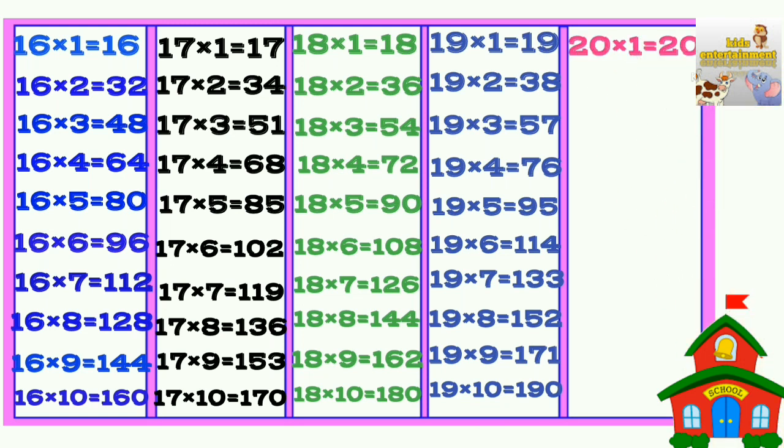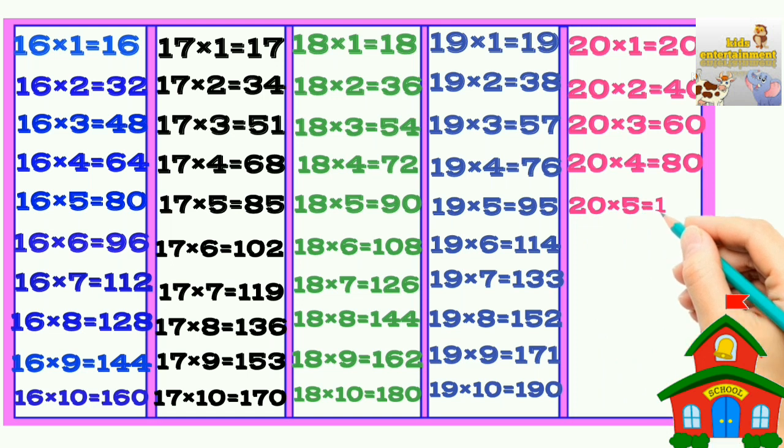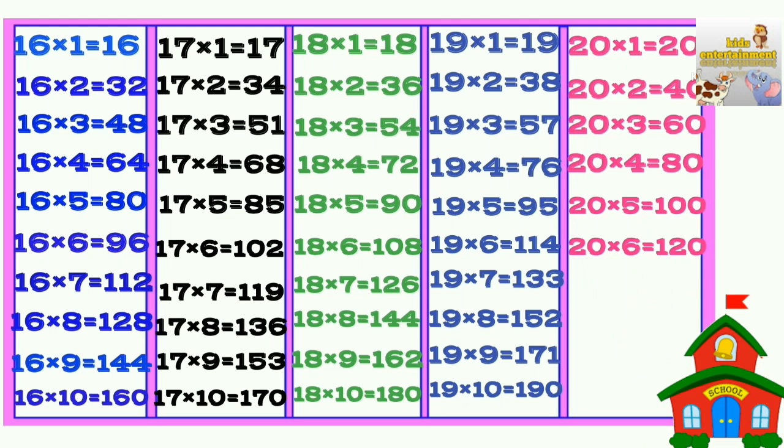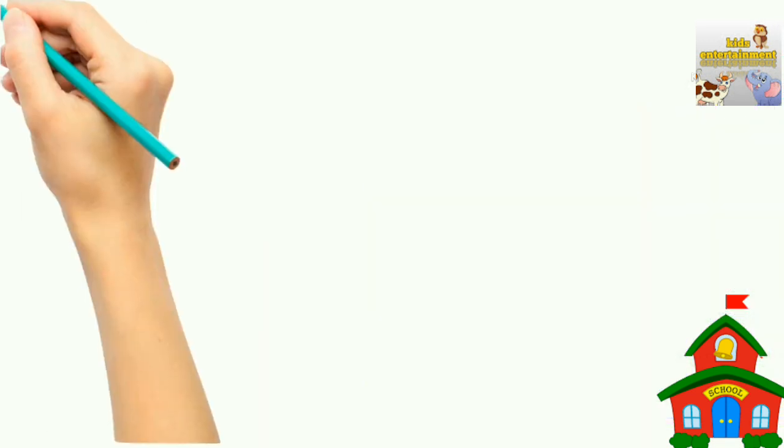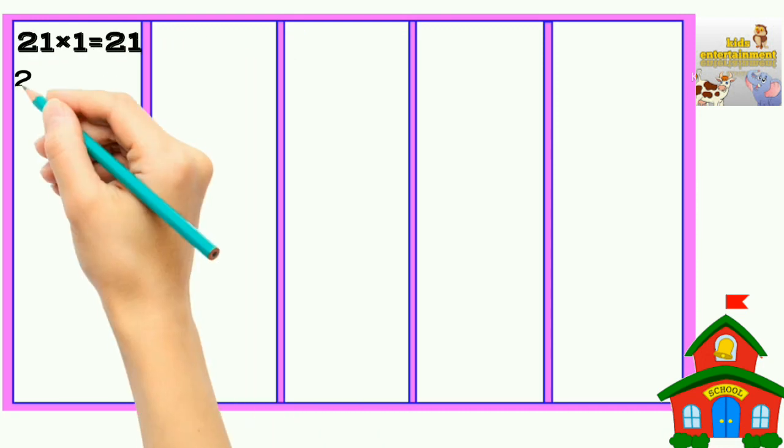20 times 1 is 20, 20 times 2 is 40. 20 times 5 is 100. 20 times 7 is 140. 20 times 8 is 160, 20 times 9 is 180, 20 times 10 is 200. 21 times 1 is 21, 21 times 2 is 42.